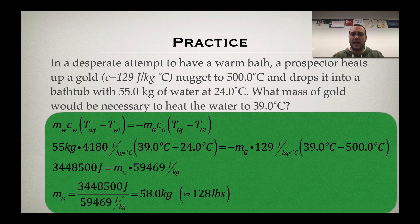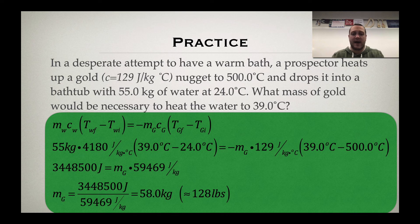So that negative in front of the energy loss side, on the gold side, is going to cancel with that negative change in temperature. So we can take our specific heat times the change in temperature and get rid of the negative. We get our energy gained equals the mass of the gold times the joules per kilogram represented by the gold. We divide it out, and we get 58 kilograms would be the chunk of gold, which is about 128 pounds.